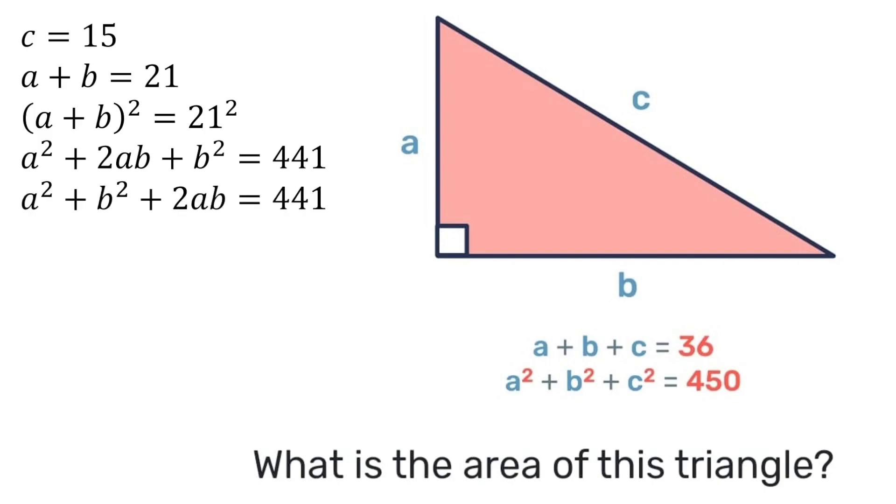But we know that a squared plus b squared can be rearranged, and if we look at those together we know that that was c squared. And c squared we had previously found to be 225.